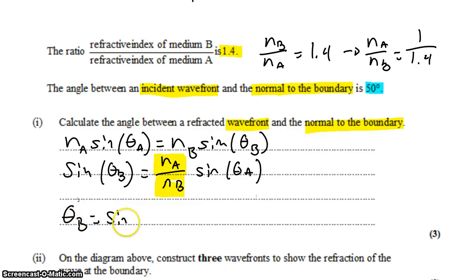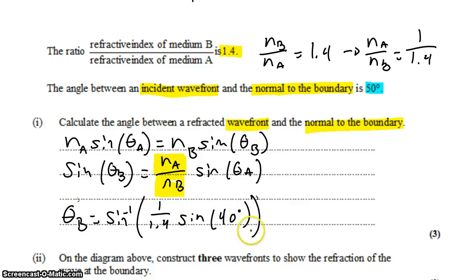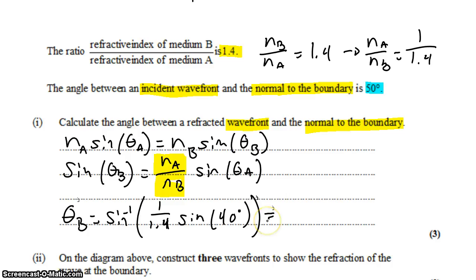Theta B equals the inverse sine of (1 divided by 1.4) times the sine of 40 degrees. Make sure your calculator is in degree mode — if you're in radian mode you'll get the wrong answer and your calculator won't give you a clue. Always double-check radian or degree mode when working with sine, cosine, or tangent. Punching this in gives 27 degrees to two significant figures.